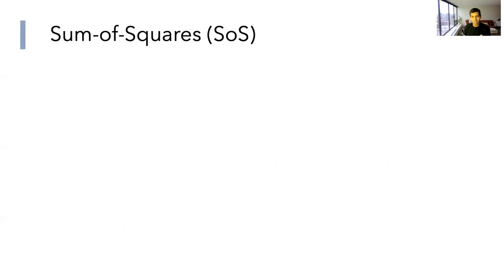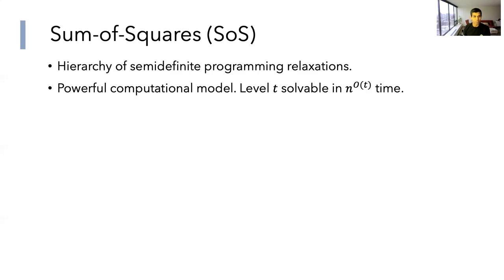The family of optimization algorithms we'll consider is the sum of squares SOS hierarchy — a hierarchy of semi-definite programming relaxations which captures many known approximation algorithms. We can think of it as a computational model whose complexity is governed by the levels of the hierarchy. For constraint satisfaction, level t can be solved in time n to the order t, where n is the number of variables.